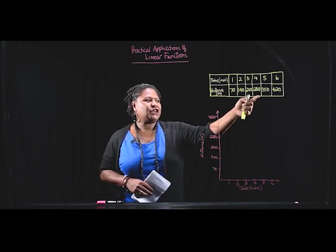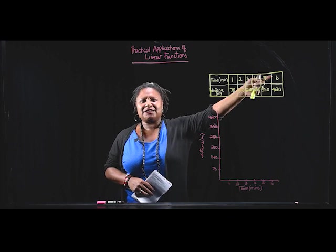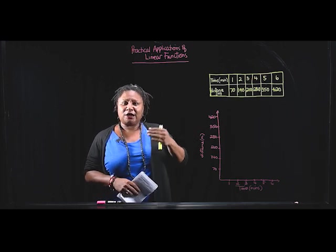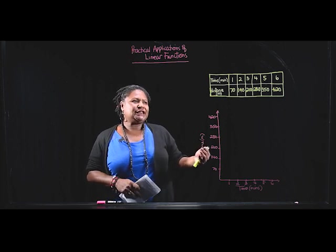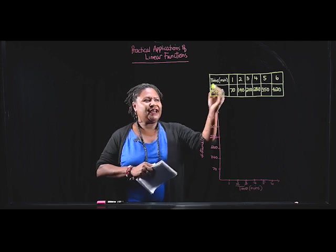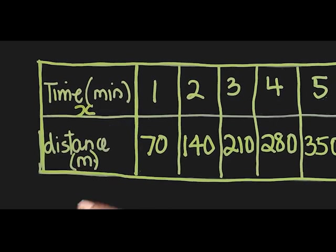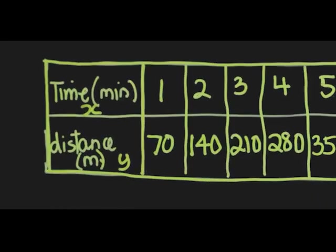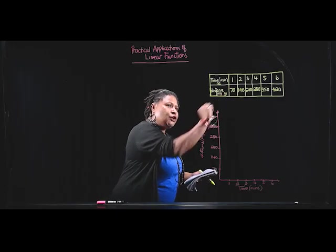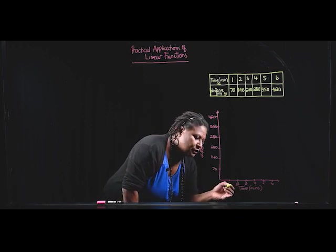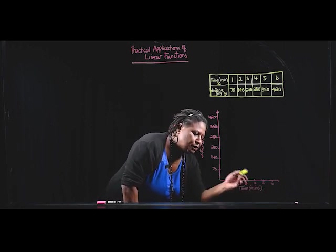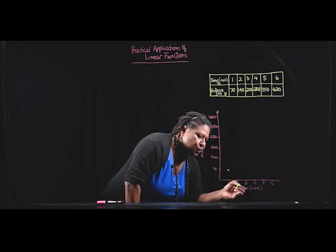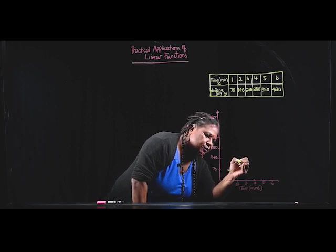So she's recorded how much distance she covers in 6 minutes. Now we've already learned about variables x and y on a Cartesian plane. So you can see that time is on the x-axis and distance is on the y-axis as shown on our Cartesian plane. So let's see the first coordinate for x is 1, that means that's 1 minute. We have 70 meters. 2 minutes at 140 meters. 3 minutes at 210.